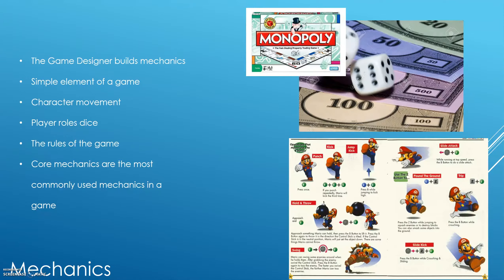In a board game such as Monopoly, there's a mechanic of the player rolling the dice, and a second mechanic of the player moving the avatar around the board depending on the result of the dice roll. These are the core mechanics of that game. There are other mechanics — like what happens when the player lands on a square and has to pay rent or can buy it — but the core mechanics are roll the dice and move around the board.